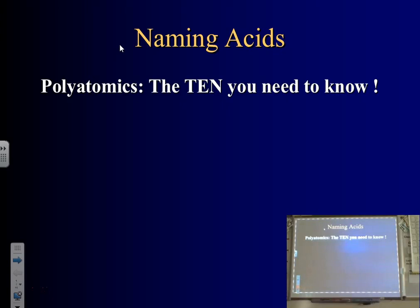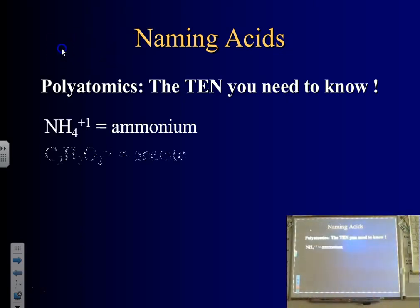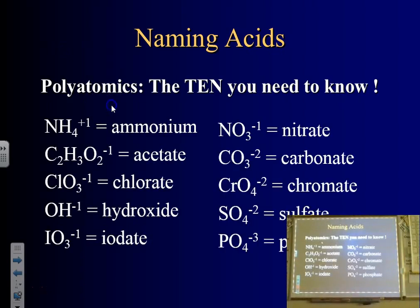Today we're going to talk about naming acids. It sounds intimidating, but it's not too bad. The first thing: make sure you know your polyatomics, especially the ones that end in -ate. Note that we won't include bisulfate, bicarbonate, cyanide, or peroxide, and we can't use ammonium for naming acids.